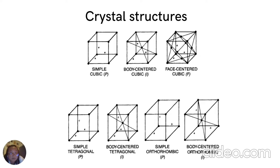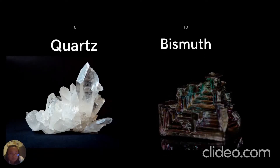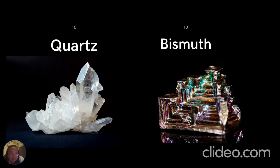Here on the slide are some familiar crystal structures that we have learned in class, such as body-centered cubic and face-centered cubic, but there are also additional lattice types that were constructed that you might not be familiar with. Some of the most common crystals are quartz and bismuth.